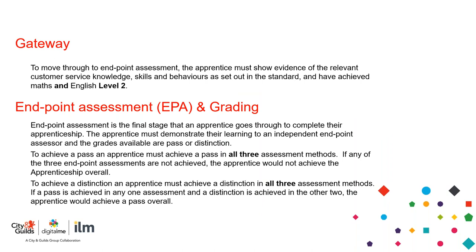Before we can consider endpoint assessment, we need to travel through gateway. This is business as usual — similar to any other apprenticeship. Because it's a level three, learners need to have achieved maths and English at level two. The usual documentation must be completed: the gateway declaration form signed by all three parties — the employer, the centre or PTP, and the apprentice themselves.